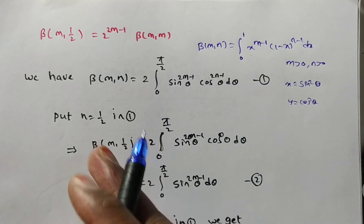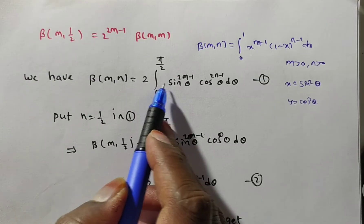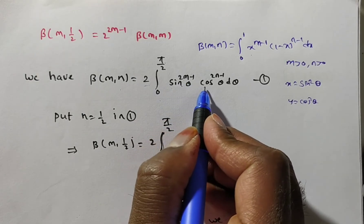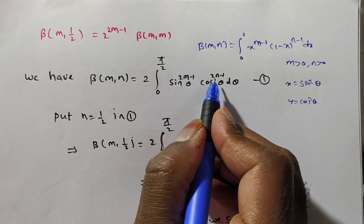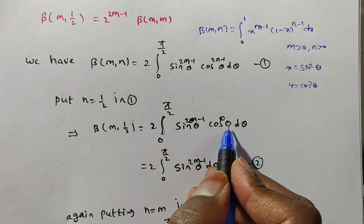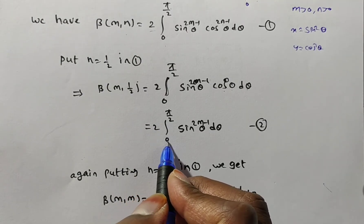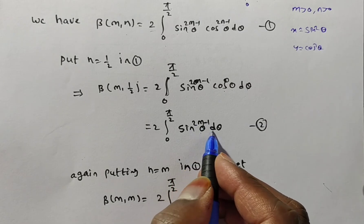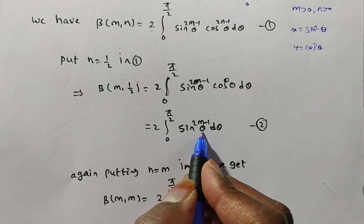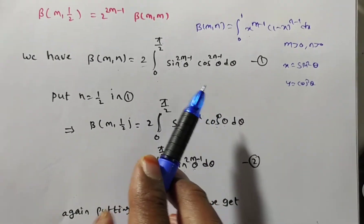If you put x equal to sin squared theta and substitute into the Cartesian form, you get the trigonometric form: beta of m comma n equals 2 times the integral from 0 to pi/2 of sin to the power 2m minus 1 theta, cos to the power 2n minus 1 theta, d theta. Now, for the LHS we need beta of m comma 1/2. So put n equal to 1/2. Then 2 times 1/2 is 1, and 1 minus 1 is 0, so cos to the power 0 theta equals 1. We are left with: 2 times the integral from 0 to pi/2 of sin to the power 2m minus 1 theta d theta. Consider this as equation number 2.